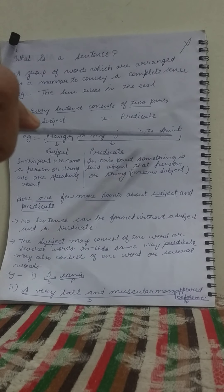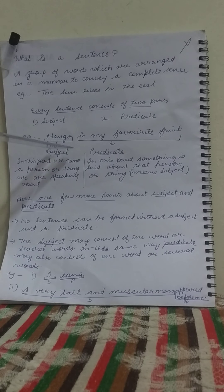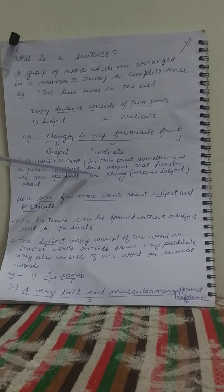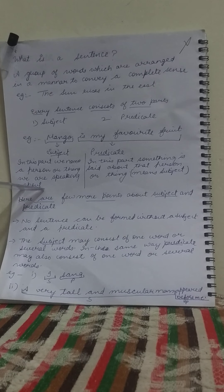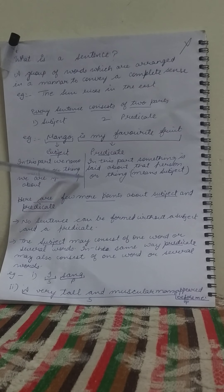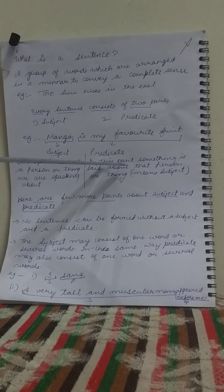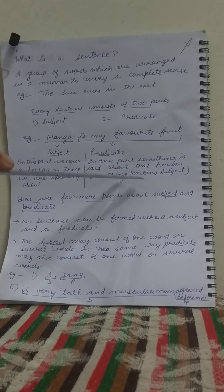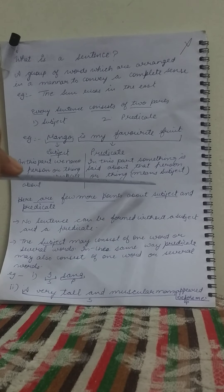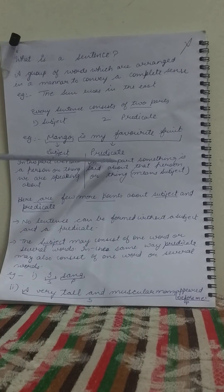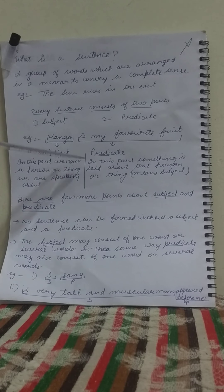For example: mango is my favorite fruit. Here, 'mango' is the subject. In this part, we name the person or thing we are speaking about. In the second part, that is the predicate, something is said about that person or thing — whatever is said in this part is said about the subject.